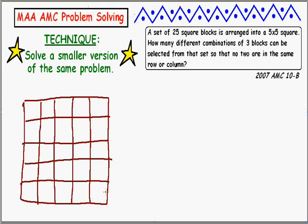Once you've done something, you've gone over the first emotional hurdle of just getting started. We've drawn a picture relevant to the problem. Now the rest of the question: how many different combinations of three blocks can be selected so that no two are in the same row or column? There's one part that scares me: the word 'combinations.' That sounds like a very mathy word. I'm not going to worry about what it means right now.